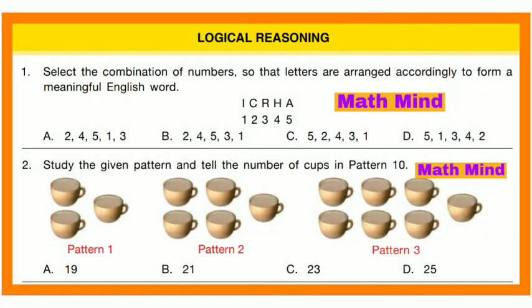Logical Reasoning, Question No. 1: Select the combination of numbers so that letters are arranged accordingly to form a meaningful English word. Letters given are I-C-R-H-A. The word formed is 'chair' C-H-A-I-R. So Option A is correct.